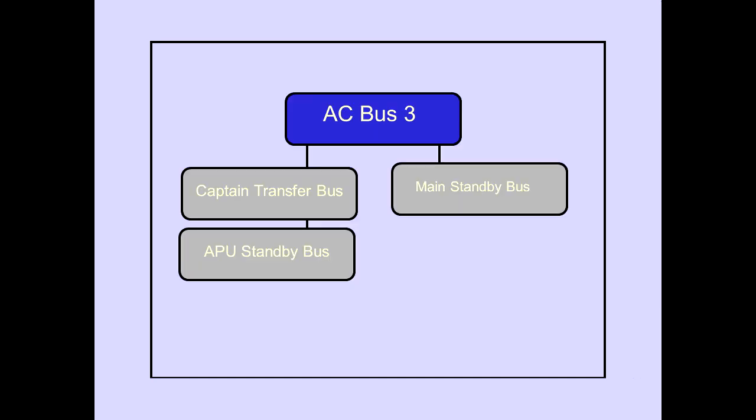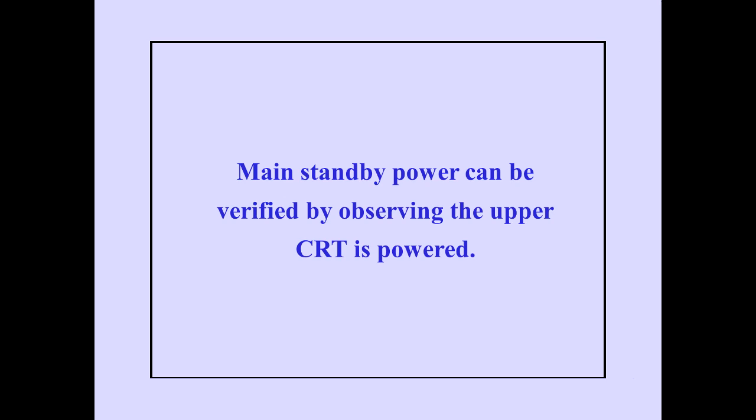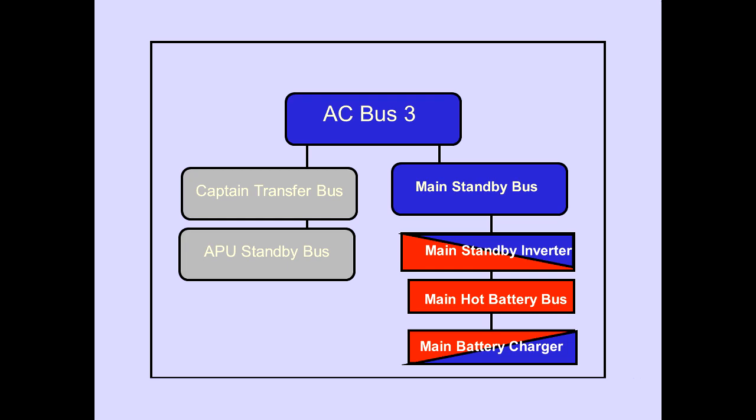The main standby bus is normally powered by AC bus 3. Main standby power can be verified by observing that the upper CRT is powered. If AC bus 3 is unpowered, the main standby bus is automatically powered by the main standby inverter, which is powered by the main battery charger through the main hot battery bus.